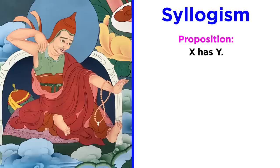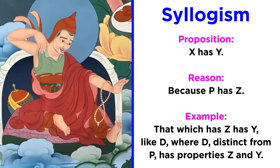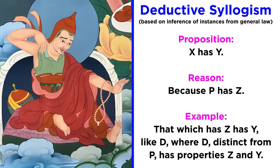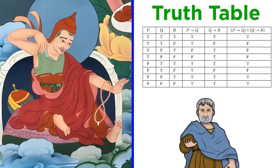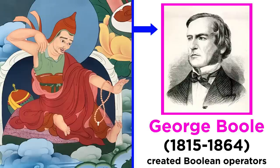One example of Dignaga's format: Proposition: X has Y. Reason: Because P has Z. Example: That which has Z has Y, like D — where D, distinct from P, has properties Z and Y. This is a clear deductive syllogism, characterized by the inference of particular instances from a general law, with an explicit focus on its format and method of applicability — in contrast with the accidental use of the syllogistic shape seen in many earlier examples. He also developed advanced notions regarding surrounding concepts and even a truth table. Although these developments were almost a millennium after Aristotle, it is now recognized that several Indian elements were more advanced than their Greek counterparts, having even influenced recent mathematicians and logicians such as George Boole, creator of Boolean operators in the 19th century.